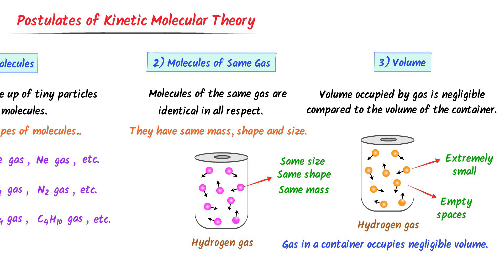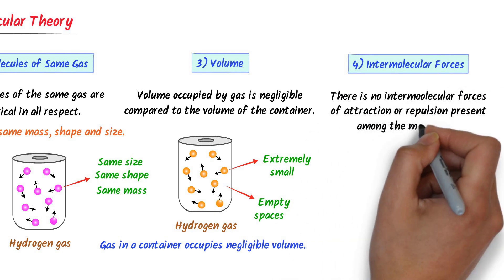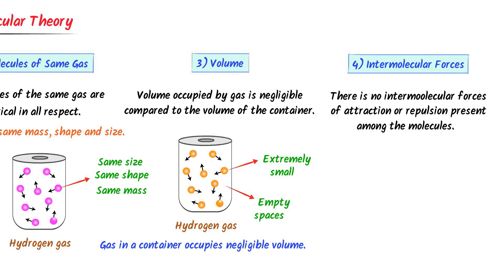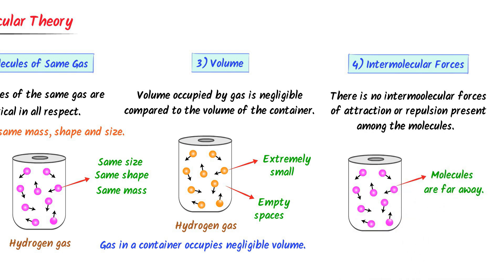The fourth postulate of the Kinetic Molecular Theory of Gases is about intermolecular forces. It states that there are no intermolecular forces of attraction or repulsion present among the molecules. Since the molecules of a gas are far away from each other, we assume no intermolecular forces are present. Remember that in real gases this is not possible — it is only applicable in the case of ideal gases.